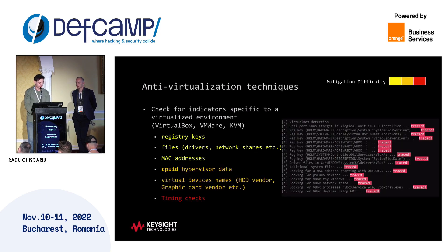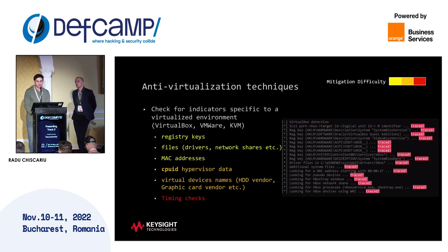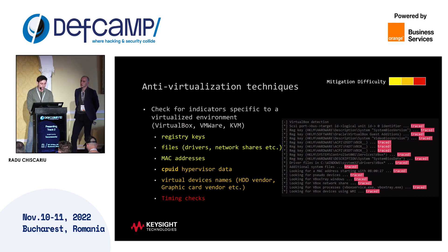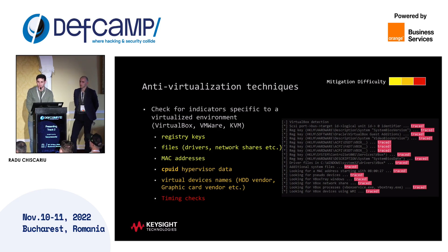Let's delve into the anti-sandboxing techniques. For anti-virtualization, the malware tries to identify artifacts related to the configuration of a virtualized system — registry keys, various files, MAC addresses specific to virtualized vendors, CPU ID information, and virtual device names. You can find most of these in the registry. If you simply install a VirtualBox system and detonate malware there without any prior configuration or hardening, it will be pretty easy for the malware to identify those artifacts.